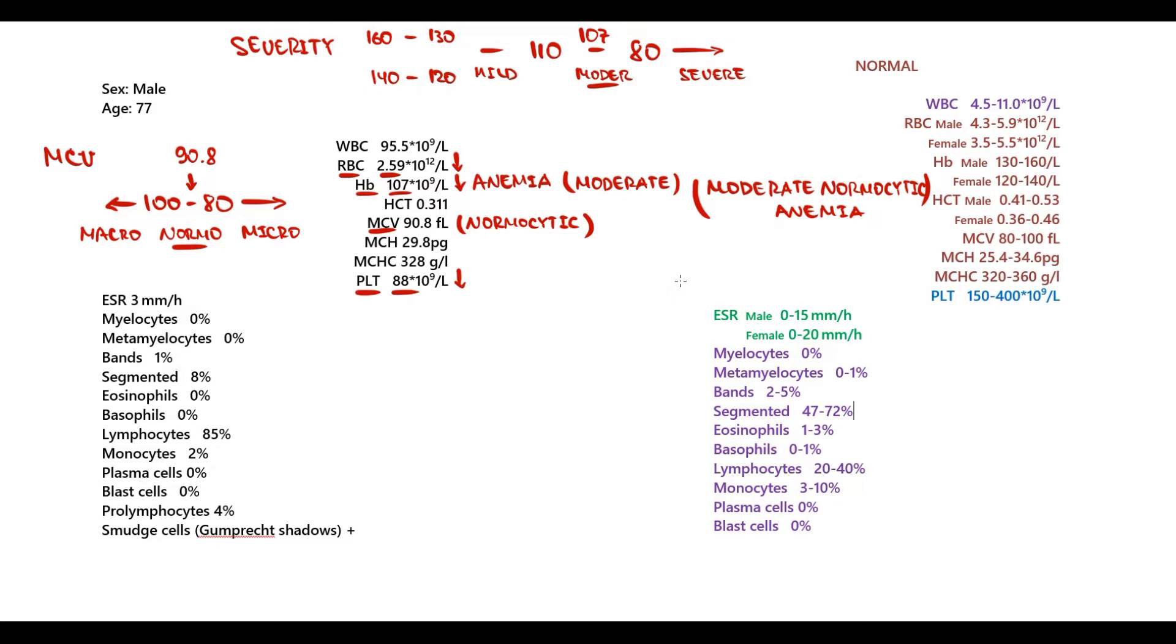The next value is platelets. Platelets are 88, which is significantly lower than normal. How severe is the thrombocytopenia? Normal platelets are 150-400. From 150 to 100 is mild thrombocytopenia, 100 to 50 is moderate, and lower than 50 is severe. In this case, it's moderate thrombocytopenia.